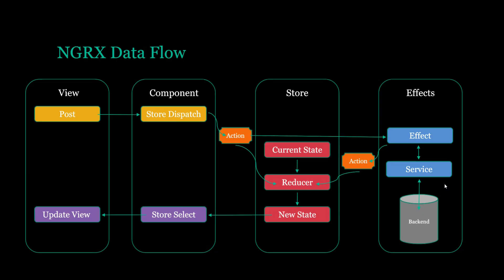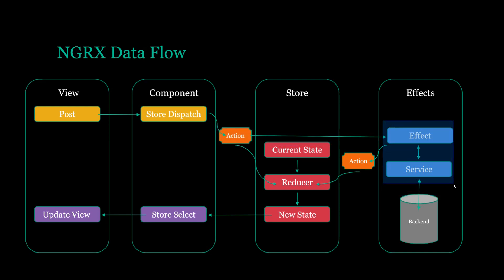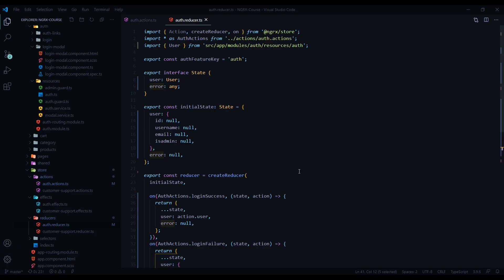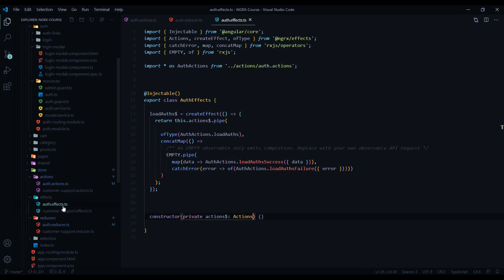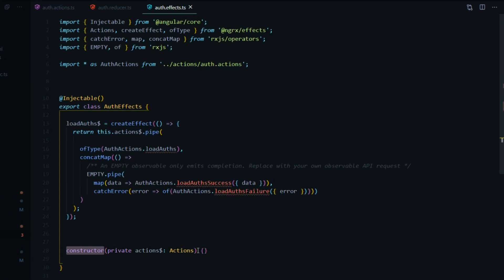Now that we created our reducer, let's create our effect. The new effect we're going to create will be listening to two actions — the login page action and also the login modal action. If any of those actions get dispatched, our effect will kick in, try to log the user in, and deal with our service. If it's successful, it'll dispatch a success action passing the user. If there's a failure, it'll also dispatch a failure action, updating our store. Inside of our auth effect file, the first thing we'll do is bring in the service within our constructor — this is our auth service, and I'll bring that in from our resources.